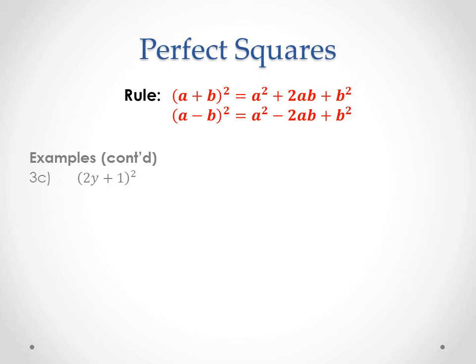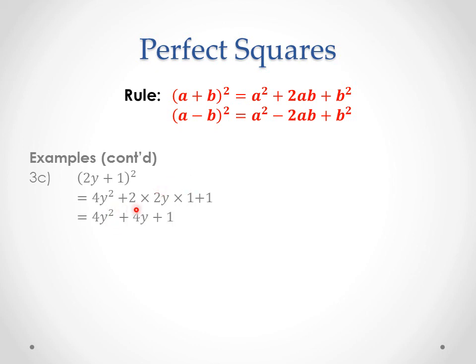Let's do a couple more examples using the shortcut. 2y plus 1 all squared: the first term squared is 4y squared, the last term squared is 1 squared which is 1, and then the middle part — first times last times 2 — is 2y times 1 times 2, giving us positive 4y. So the answer is 4y squared plus 4y plus 1. Pause the video if you need a moment to write this down and check it's correct.